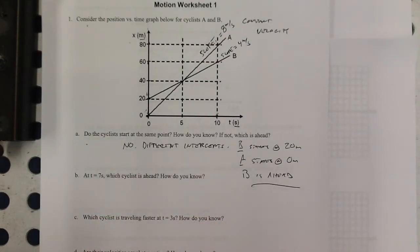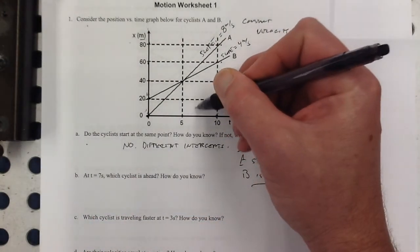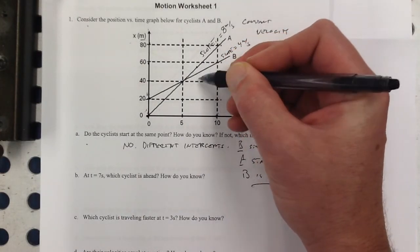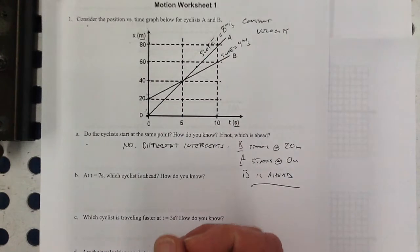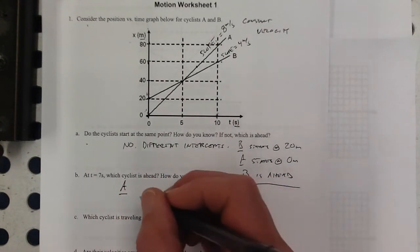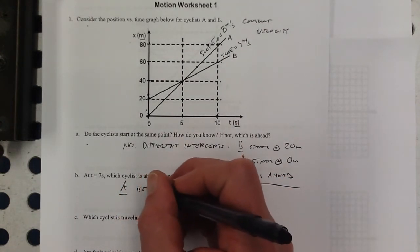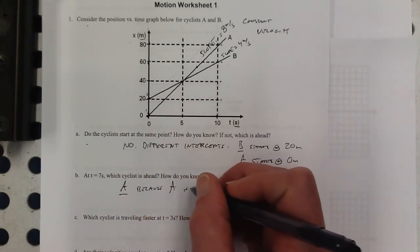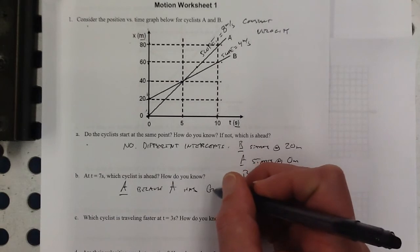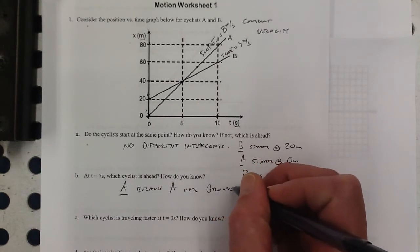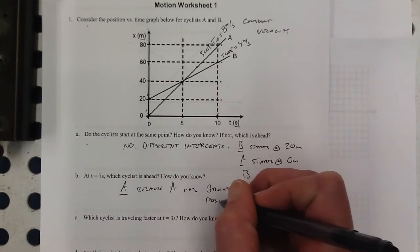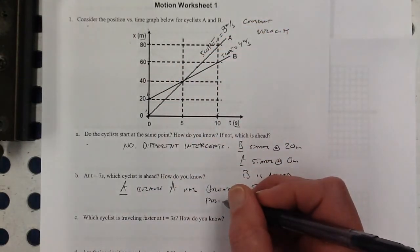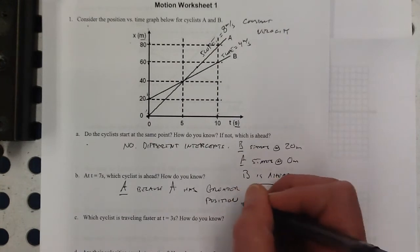At time 7, which cyclist is ahead? Times 7, looks like A is ahead of B because A has a greater position. You could say, like, because the graph of A is above the graph of B or something like that, that would work too.